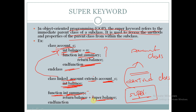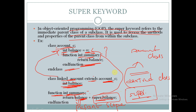Here, super.balance refers to the balance in the main class — that is, the base class property balance. This balance in the current scope refers to linked_account's own balance, while super.balance refers to the base class property balance.